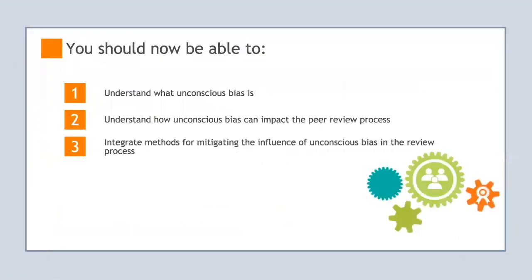Ask yourself questions such as: Are underrepresented candidates subject to different expectations or standards in order to be considered as qualified as the majority? Is research from smaller institutions or minority groups being undervalued? Have accomplishments, ideas, or findings of underrepresented candidates been unfairly attributed to research directors or collaborators despite evidence to the contrary? You have now completed the bias and peer review training module. By completing this module you should be able to understand what unconscious bias is, how it can impact the peer review process, and integrate methods for mitigating the influence of unconscious bias. Being aware of unconscious bias is only the first step — by using the additional online training resources provided, you can review applications in a manner that is more conscious, fair, avoids unequal outcomes, and will lead to an improved review process and greater parity in grant and award distribution.